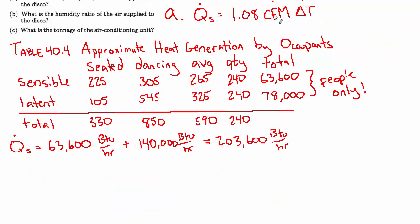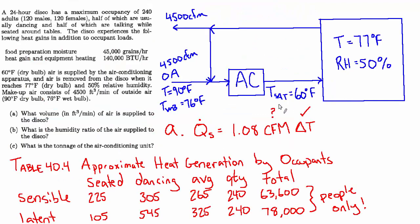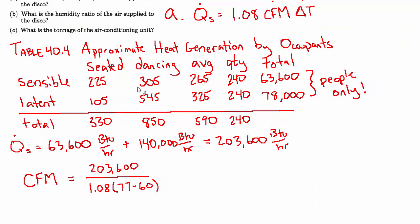Which we can then plug into this formula, which I'll rearrange to solve for CFM. So the volume flow rate of air that we need is going to be q dot over 1.08 and the Delta T. So let's sub right in: 203,600 over 1.08 and 77 minus 60, where 77 is the conditions in the room and 60 is the temperature of the supply air. And that works out to 11,090 CFM, and that is answer A.